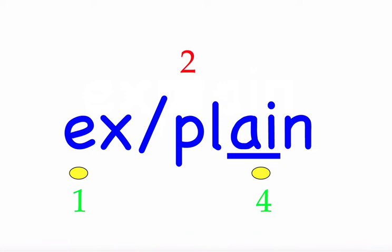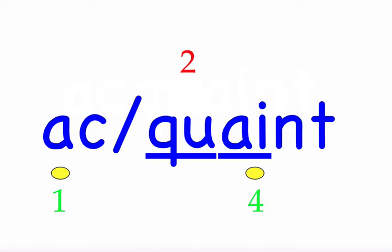The next word is 'acquaint.' I will acquaint myself with the facts. For spelling, pronounce it as 'ac-quaint.' First syllable 'ac' — two sounds, A-C. Second syllable 'quaint' — five sounds, Q-U-A-I-N-T. Mark the word. Acquaint.